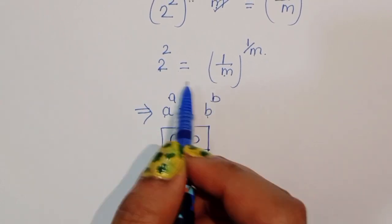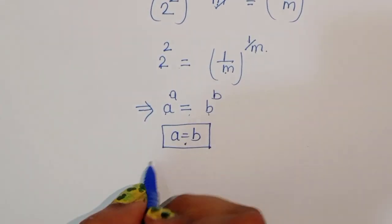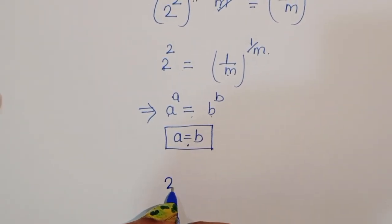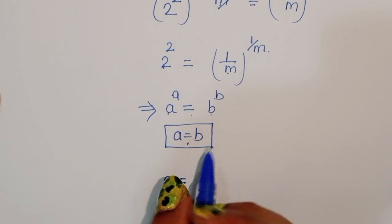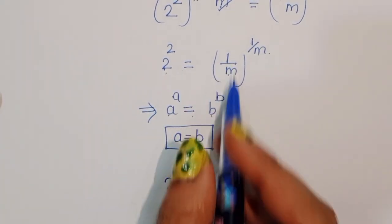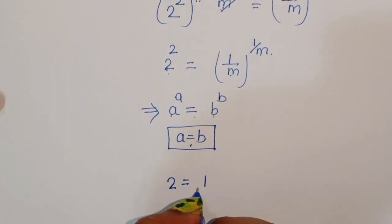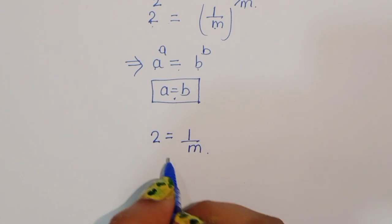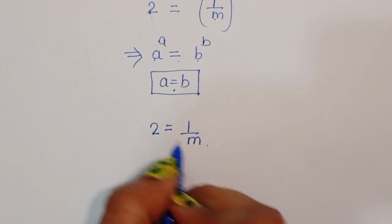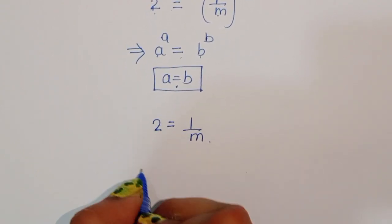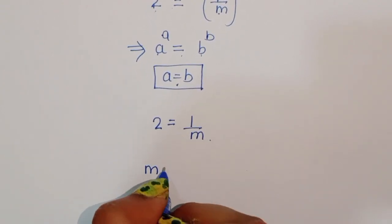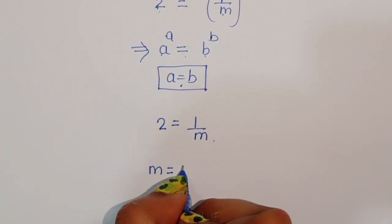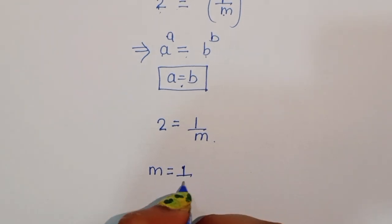Therefore, LHS is equal to RHS. So here we can write 2 is equal to 1 upon m. Now, doing cross multiplication, m is equal to 1 by 2.